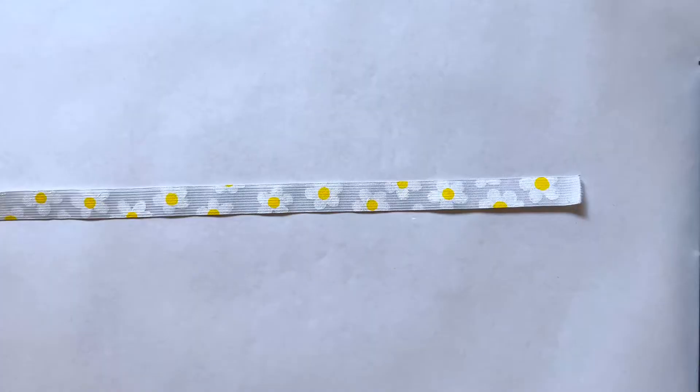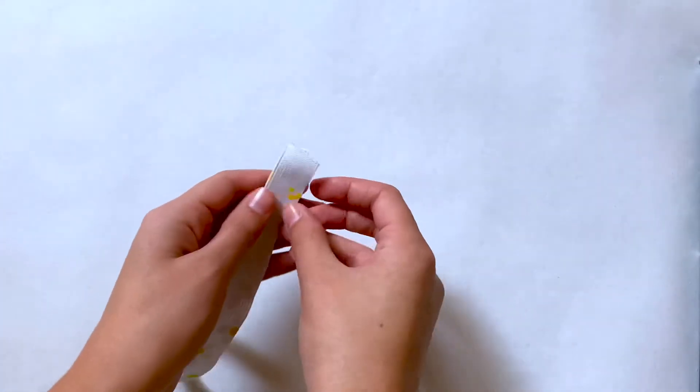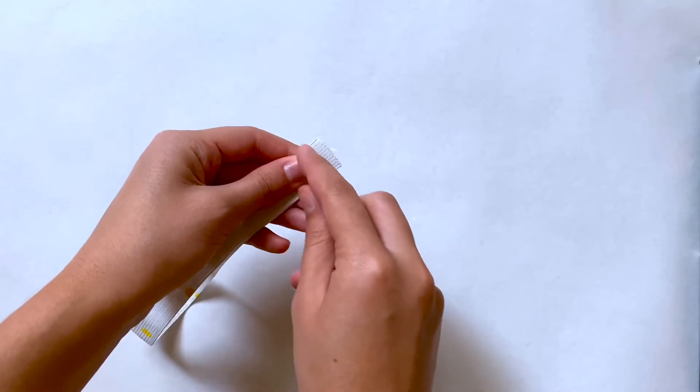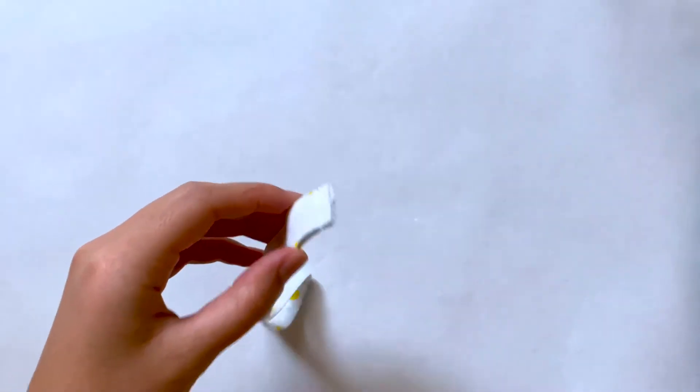The next thing we need to do is sew together the two ends so it forms a circle. So I'm just folding this in half with the daisies facing on the inside, and then I'm going to do a straight stitch right along the end. After that's done and you can open it up, you can see...